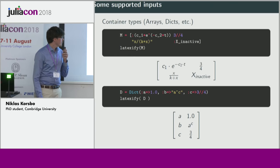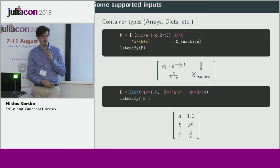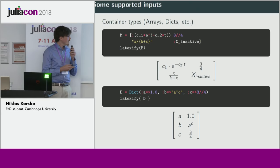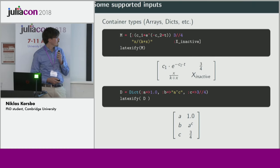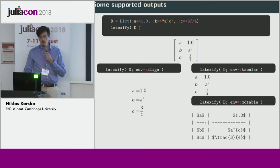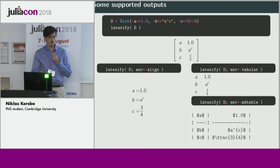You can also supply a dict. The details in these slides are not important, so don't try to read all of the equations — they're nonsense anyway. In these particular cases there's actually more than one different kind of LaTeX environment you might want as output. All different kinds of input have a default output, but you can override this using a keyword argument, so you can choose to have your output as an align or as a tabular environment.